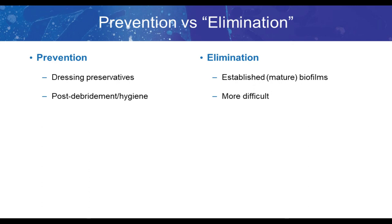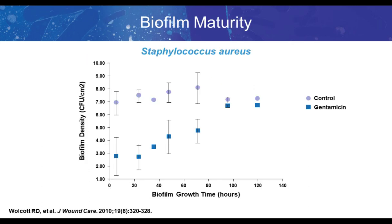If wound debridement and hygiene is not adequate, there might still be intact biofilm left, and in that case one would want a treatment that can actually eliminate a mature biofilm. Here's an example of Staphylococcus aureus in the drip flow reactor. The purple circles are the control biofilm over time, with y-axis as biofilm density in CFU per centimeter squared and x-axis as how long the biofilm is grown. The blue squares represent a biofilm treated with a large dose of gentamicin — we get about a four-log reduction at four and 24 hours, and then the biofilm gets harder and harder to kill as time goes on.